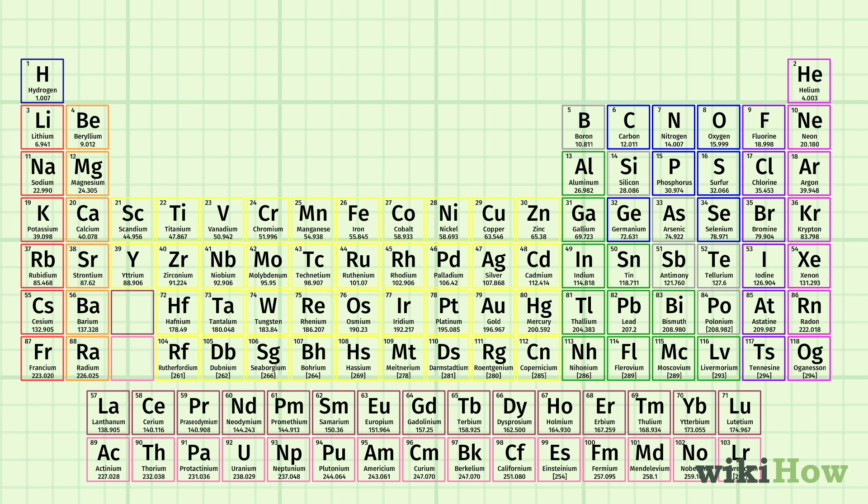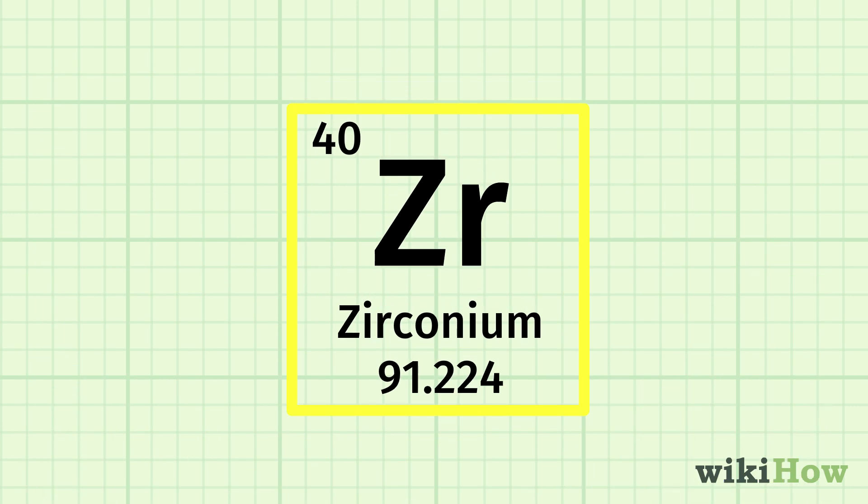For instance, the relative atomic mass of zirconium, Zr, is 91.22.